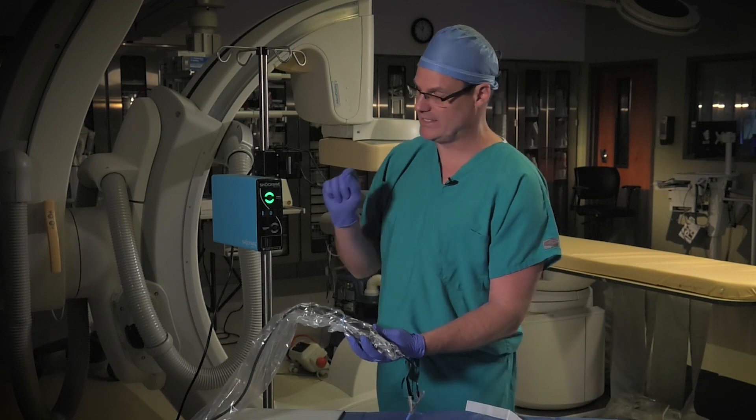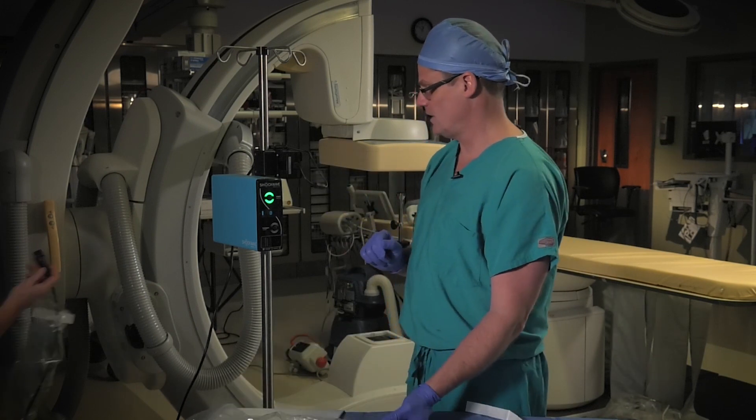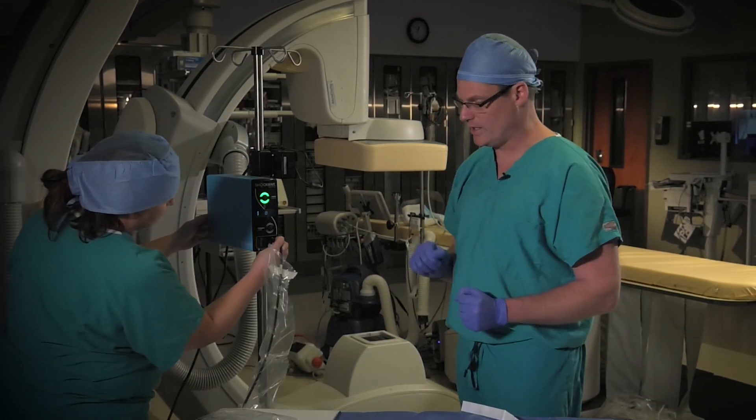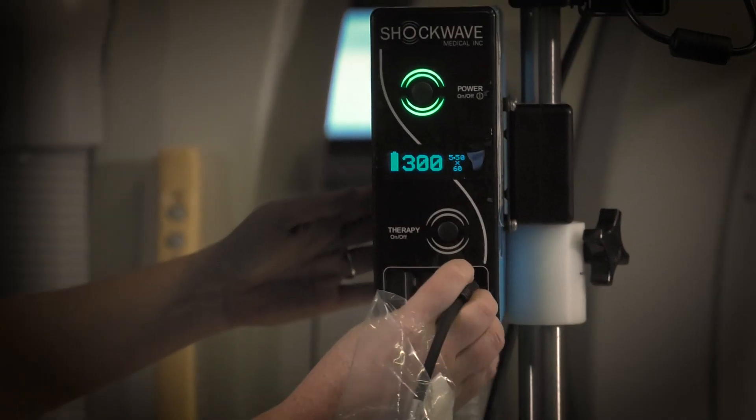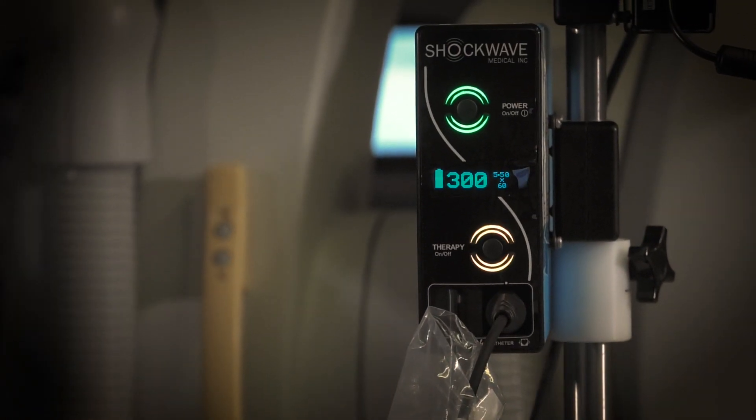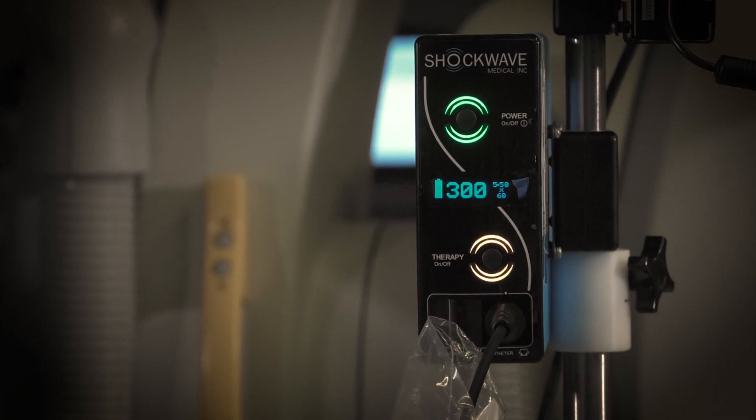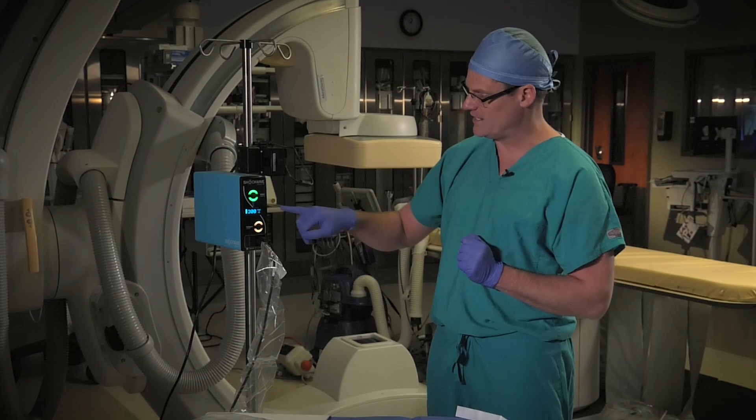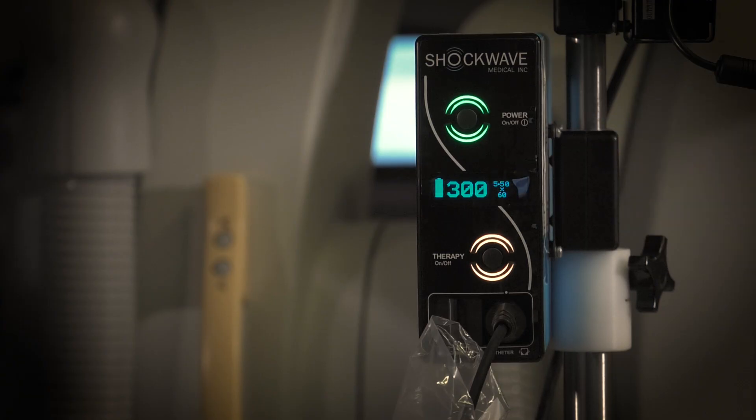Now what we're going to do is our non-sterile technician is going to plug the connector cable in. The generator recognizes the catheter that it's connected to. It's a peripheral catheter, so we're going to see there's 300 pulses that can be delivered. To the left we have a full battery, and it lists the balloon size. This is a 5.5 by 60 millimeter balloon lithotripsy catheter.